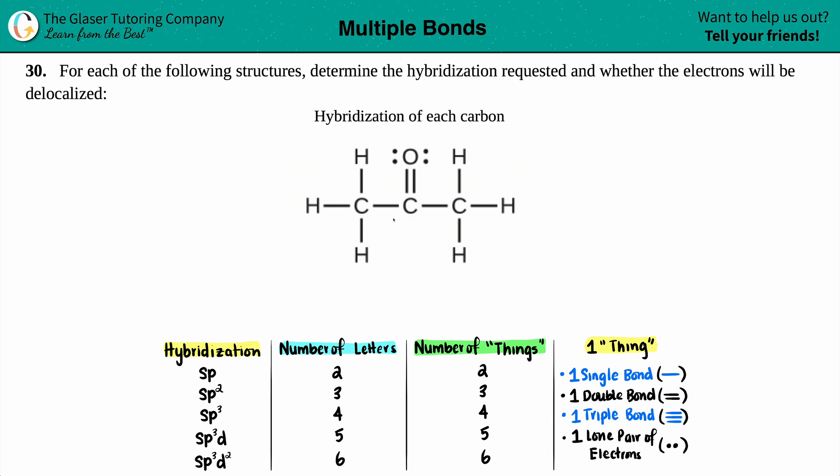Number 30. For each of the following structures, determine the hybridization requested and whether the electrons will be delocalized. In this question, we just have to find the hybridization of each carbon.